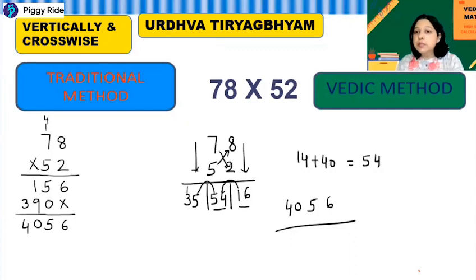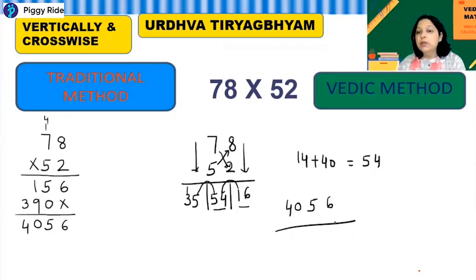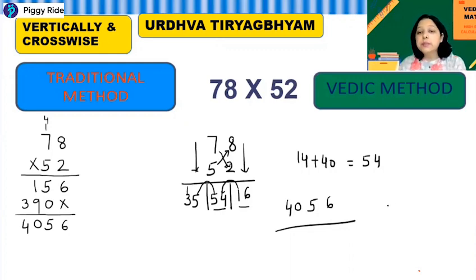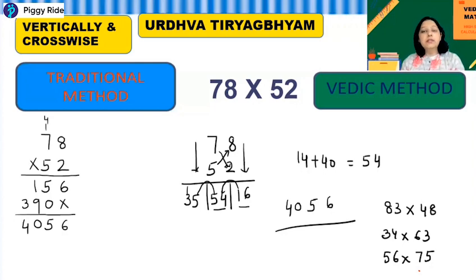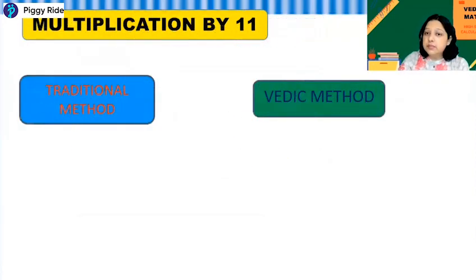Now you can try two-digit multiplication with this Vertically and Crosswise method. For example: 83 times 48, or 34 times 63, or 56 times 75. Any two-digit number multiplied by any two-digit number can be done easily with this method.